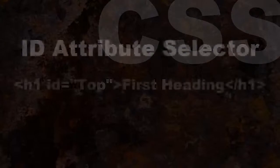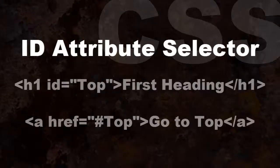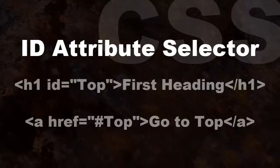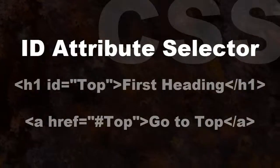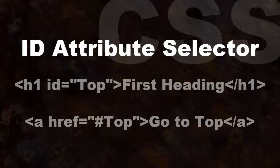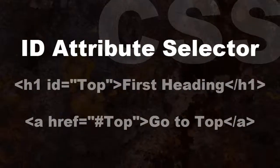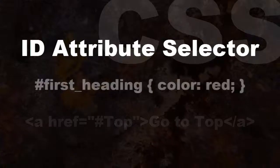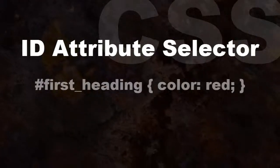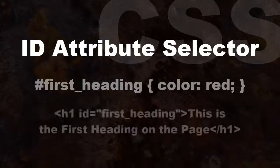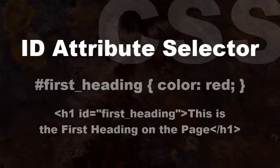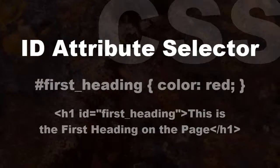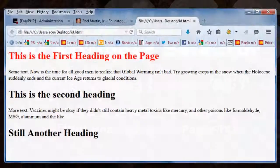The ID selector uses the ID attribute of an HTML element to select that specific element. ID is a unique identifier — on any one page, there can only be one of that ID. Also, the ID name cannot start with a numeral. For example: #first_heading { color: red; } and in HTML: <h1 id="first_heading">This is the first heading on the page</h1>.